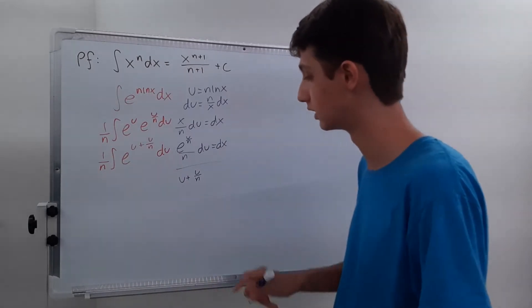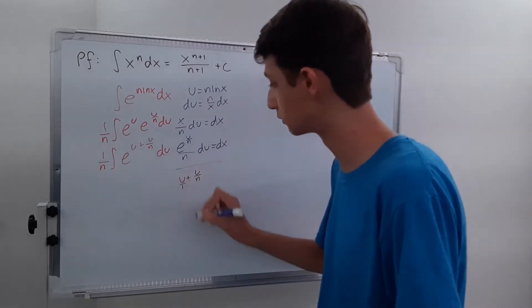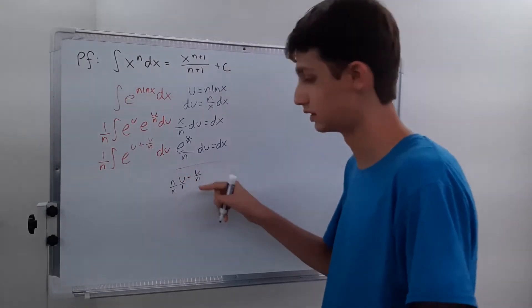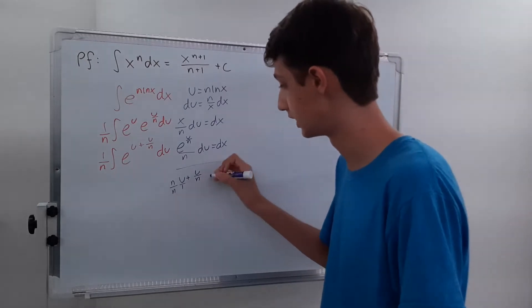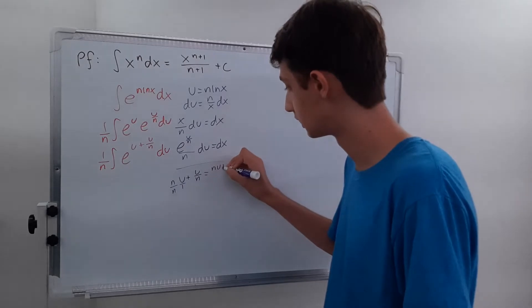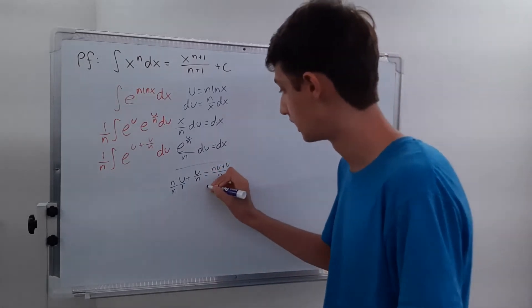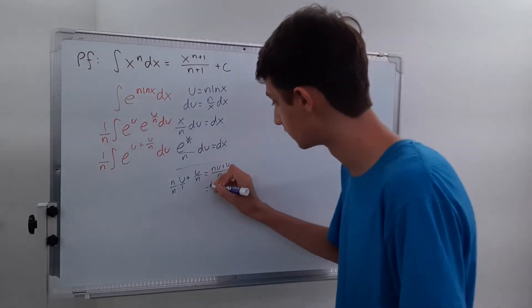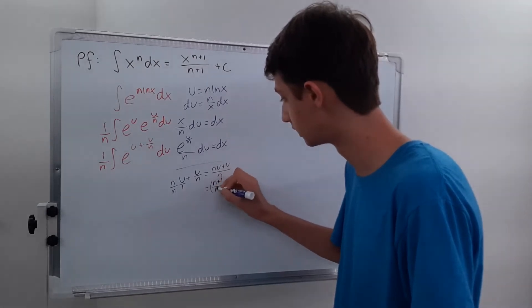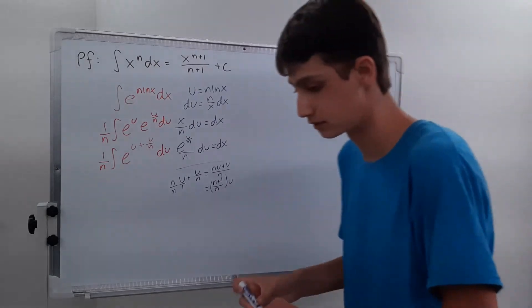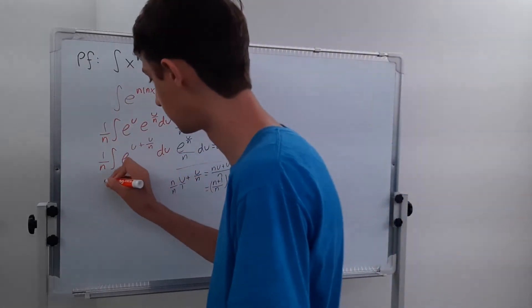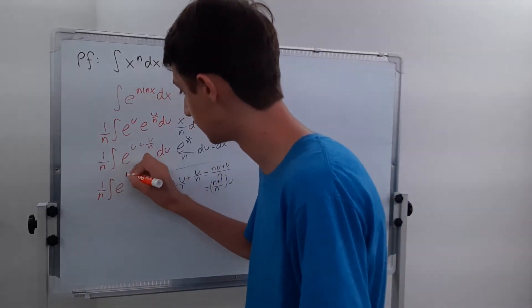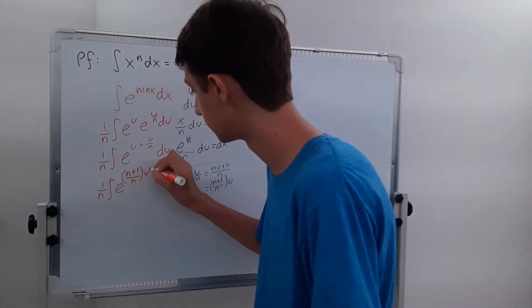u plus u over n: writing u as u over 1 and multiplying by n over n to get a common denominator gives n·u plus u over n, and factoring out u gives n plus 1 over n times u. So we can rewrite as 1 over n times the integral of e to the quantity n plus 1 over n times u, all times du.